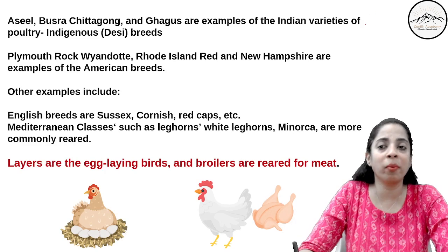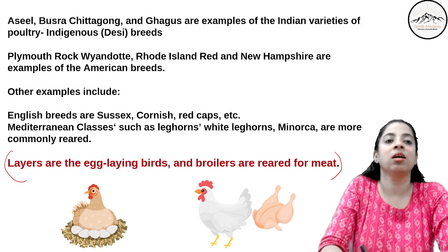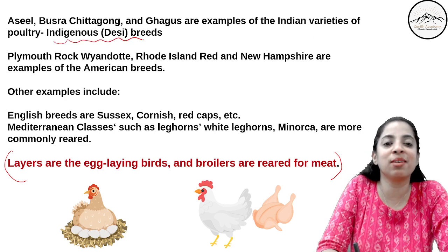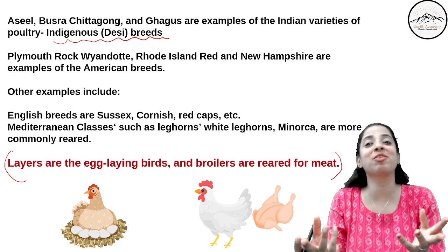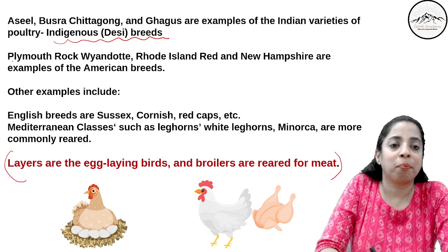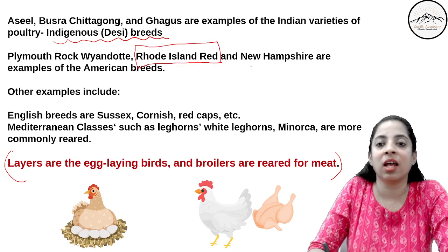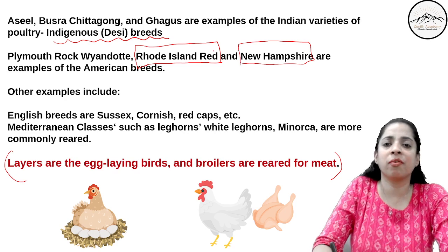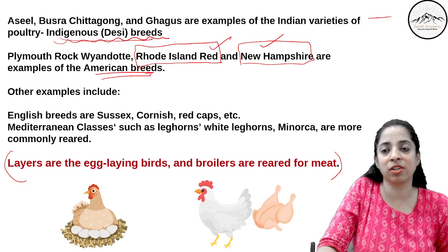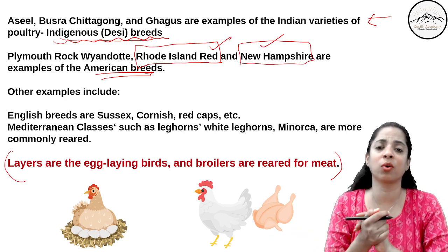You don't have to learn so many examples — just two or three are enough. Asil, Busra, Chittagong, and Gagos are examples of Indian indigenous or desi breeds of poultry. These names are very difficult — just learn the spellings. For American breeds: Plymouth Rock, Vyandot, Rhode Island Red, and New Hampshire. Rhode Island Red is important. You can focus on learning Asil and Gagos for Indian breeds, and Rhode Island Red and New Hampshire for American breeds.